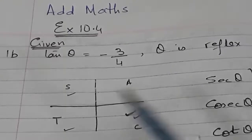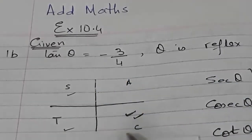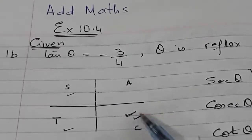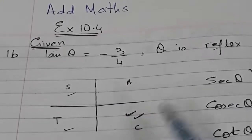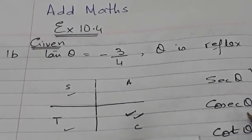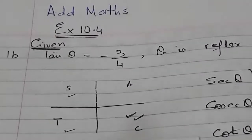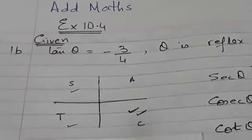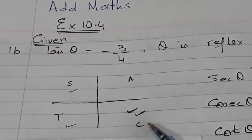From these two given hints I know that my answers are in the fourth quadrant. In the fourth quadrant only cos is positive, and I have to find the values of sec θ, cosec θ, and cot θ. I have given you the hint here that cos is positive.